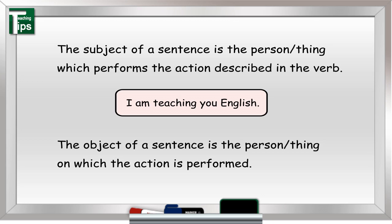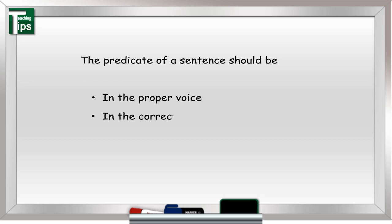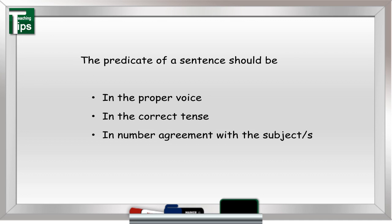Next, tell the students a predicate has to be used to ensure the subject and object are defined correctly. In the sentence above, 'am teaching' is the predicate, as it clarifies which action was performed and on whom. End the session by writing on the board that the predicate of a sentence should be in the proper voice, in the correct tense, and in number agreement with the subject or subjects.